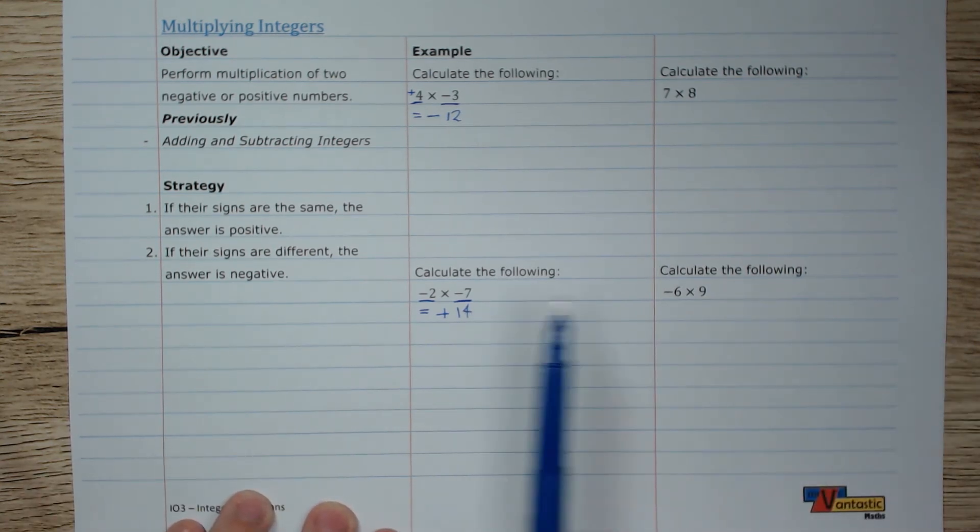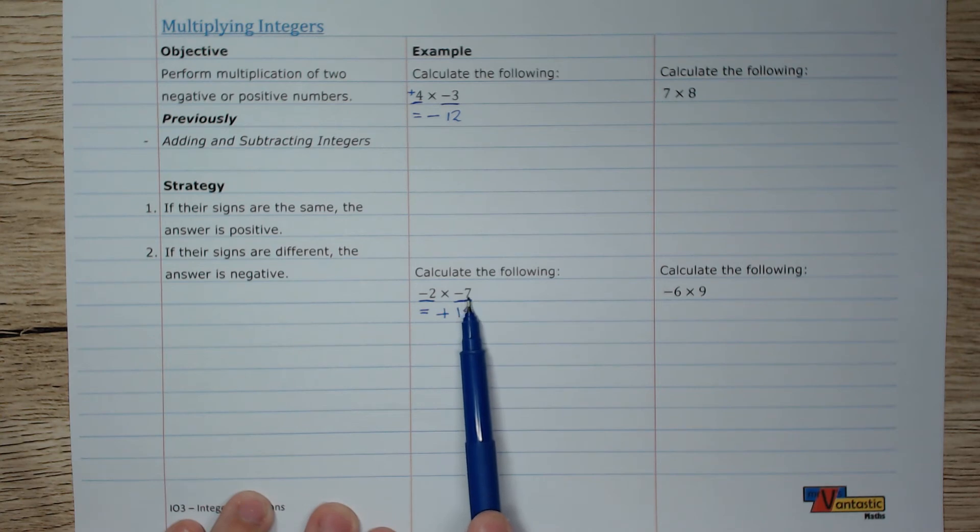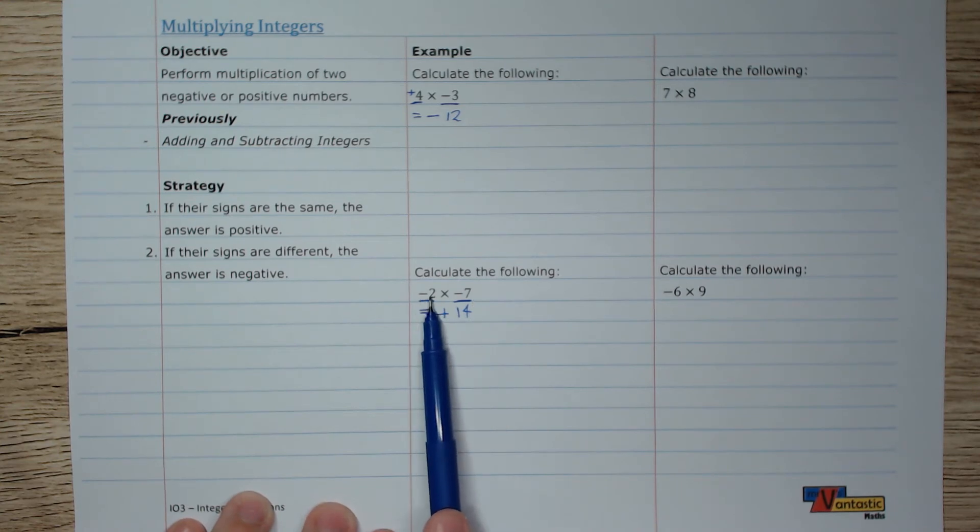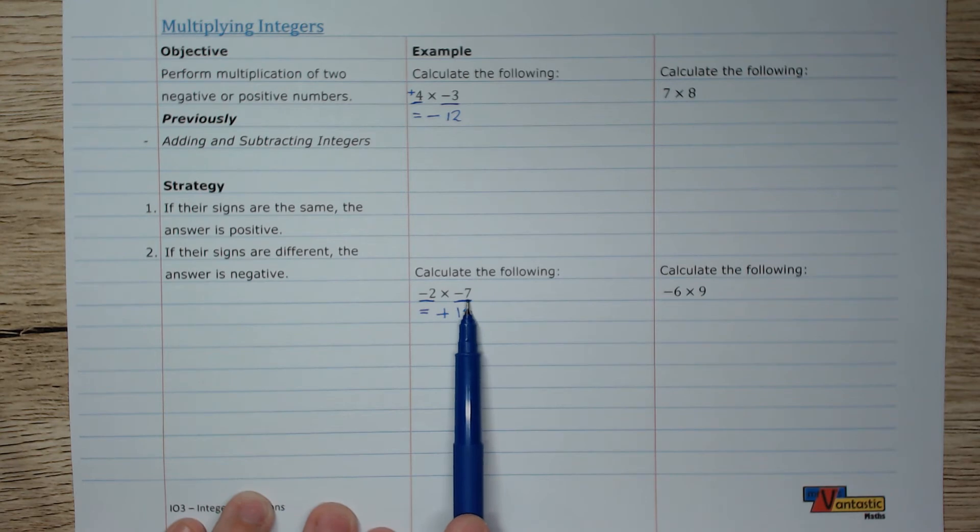Again, does that make sense? Well, if we have 2 lots of $7 debts, and we are getting rid of those 2 lots of $7 debts, we're going to end up being $14 better off than we started. So the positive does make sense.